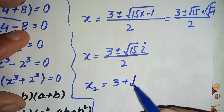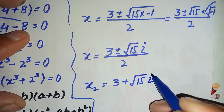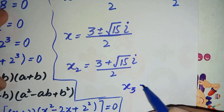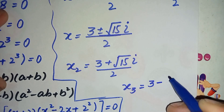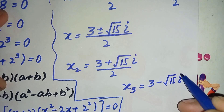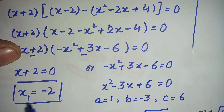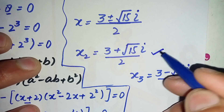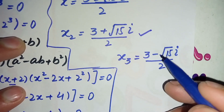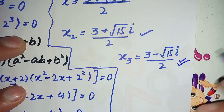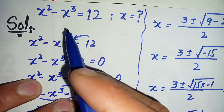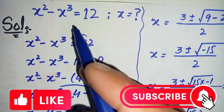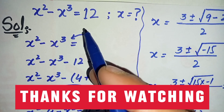So the three solutions are: x₁ equals minus 2 (the real solution), x₂ equals (3 plus square root of 15 · i) divided by 2, and x₃ equals (3 minus square root of 15 · i) divided by 2 (the two complex solutions). These are the roots of this equation. Please subscribe to our YouTube channel for more interesting math videos. Thank you for watching, take care, see you in the next video, bye bye.